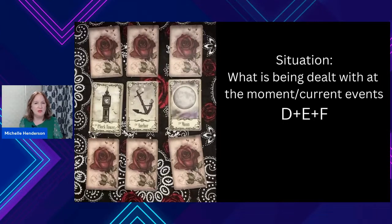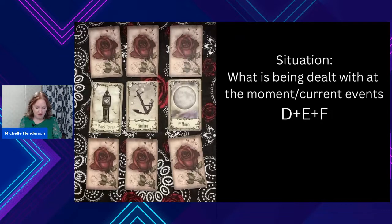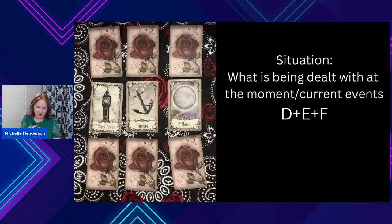Let's look at the situation — what is this person dealing with at the moment and current events? We have the tower, the anchor, and the moon. This may mean that this person, whatever's going on, has a strong defense and isolates themselves whenever things are going to get a little rocky. The moon represents a very emotional time, so this person is very emotional, and this loneliness may become normal in the situation that this person is in.